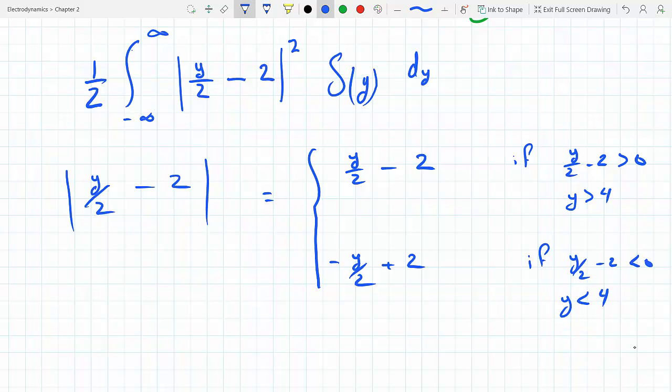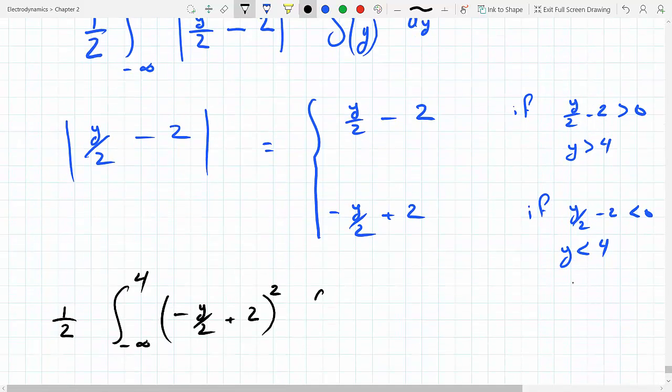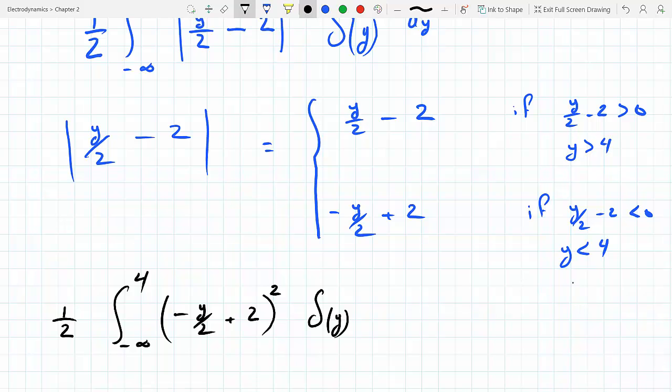If I continue this way, you have the integral from minus infinity to 4, and then you have this squared times Delta y dy. Plus one half, now I'm going from 4 to infinity, and then I use the first function y over 2 minus 2 Delta y dy.